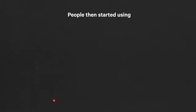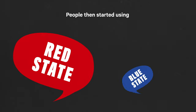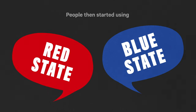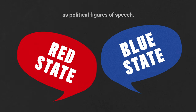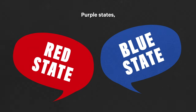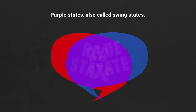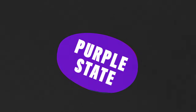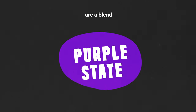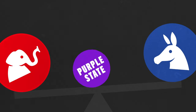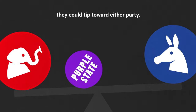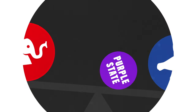People then started using red state and blue state as political figures of speech. Purple states, also called swing states, are a blend of red and blue. They're so evenly divided, they could tip toward either party.